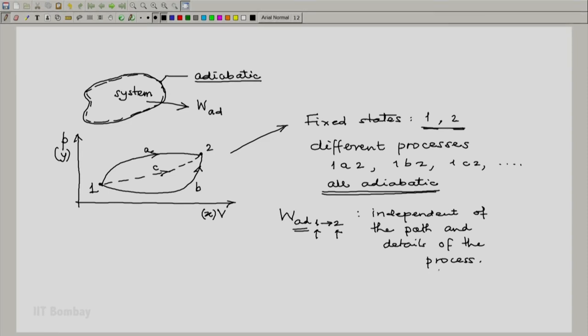Whether during the process one mode of work was used or another mode of work was used or a combination of the modes was used. All we need is that the initial and final states are fixed. If those two are fixed and the process is adiabatic, the work done would be the same.